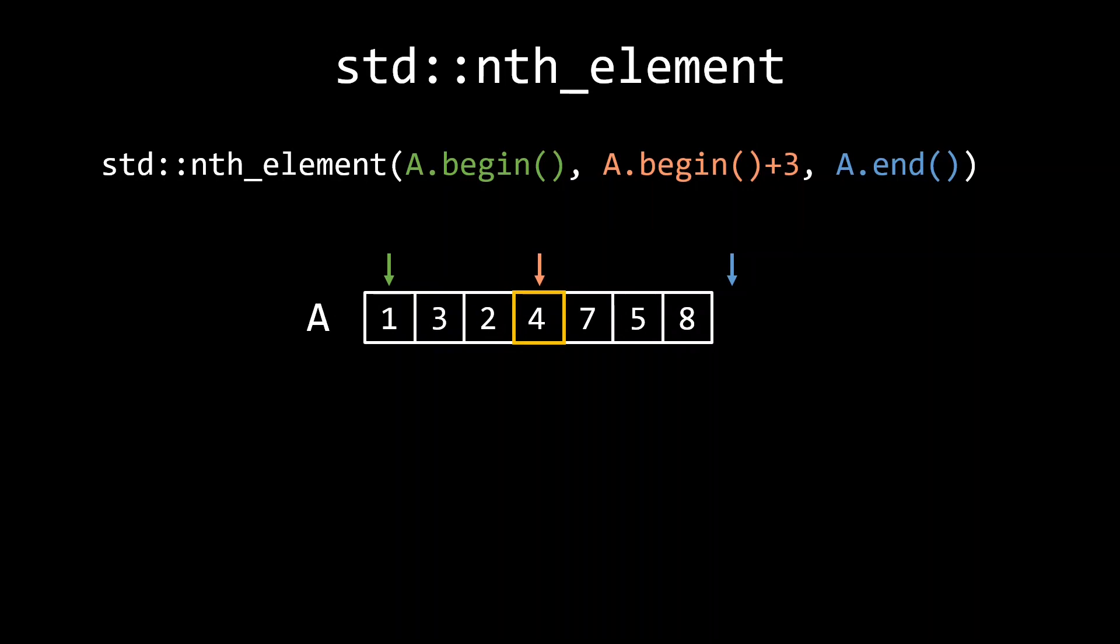First, the nth element, the fourth in this case, will be moved to the fourth position. In other words, the nth element is correctly sorted. Secondly, all elements smaller than the nth element will be moved such that they end up before the nth element. And similarly, those that are larger than the nth element end up after it.